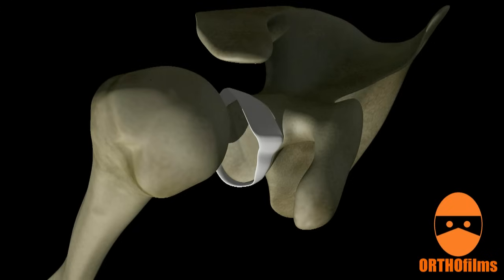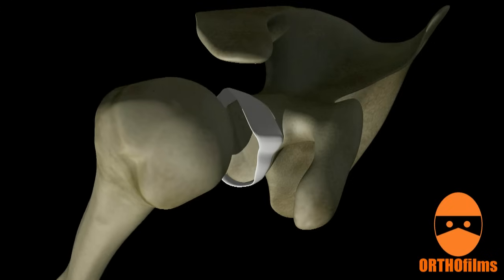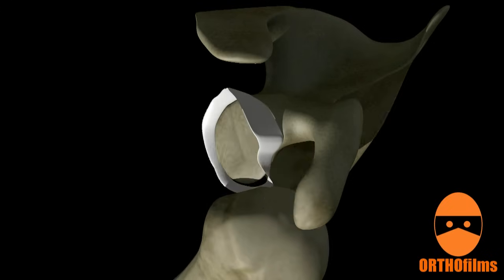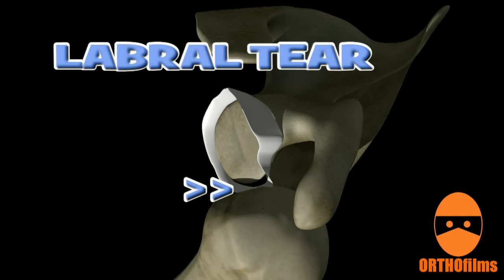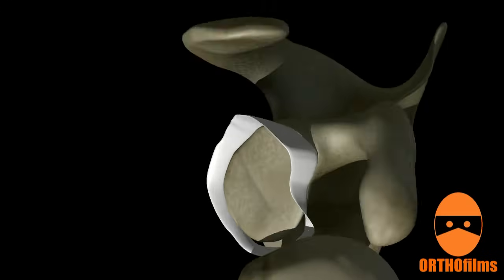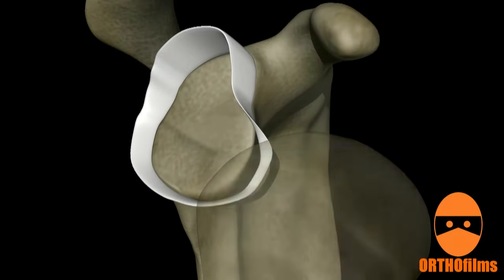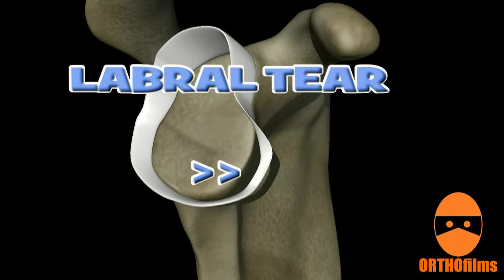Sometimes the humeral head tears part of the labrum away from the glenoid as it dislocates. This is known as a Bankart lesion. The Bankart lesion can result in chronic instability and often requires surgical repair.